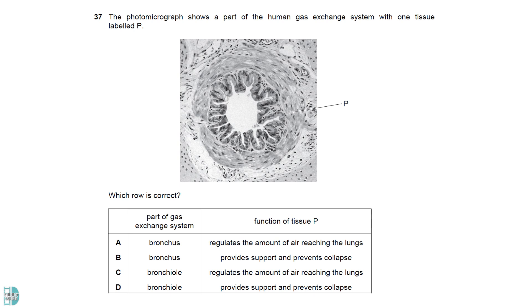The bronchus should contain cartilage plates, which is absent in the photo. So, A and B are wrong. P is the smooth muscle layer of the bronchiole. It can contract and relax. This allows the changes in the lumen diameter, regulating the amount of air that can pass through.